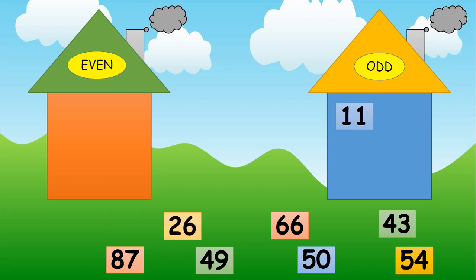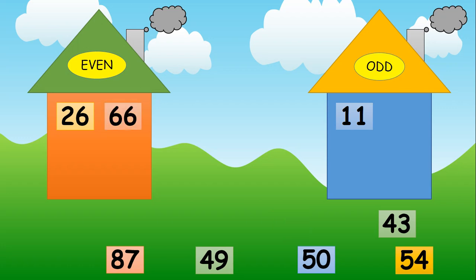Look at the next number: 26. Look at the ones place. Which digit is in the ones place? Yes, six. So six is an even number. So the number 26 goes into the even house. Now look at the next number: 66. Look at the ones place. Which digit is in the ones place? Yes, 6. So the number 66 we will place in the even number house.